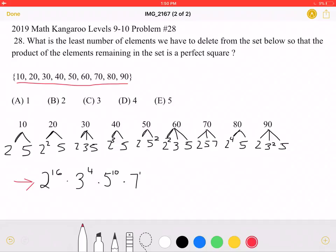The question asks for the least number of elements we have to delete so that the product of the remaining elements in the set is a perfect square. In order for this product to be a perfect square, each prime number must be to the power of an even exponent.